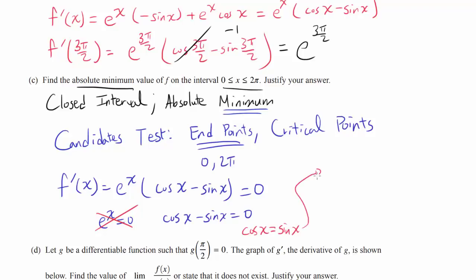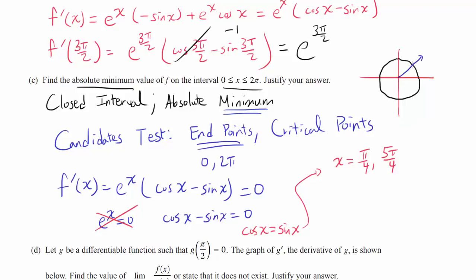So we need cosine of x to equal sine of x. Drawing the unit circle, there are two values on [0, 2π] where the x and y values are the same: pi over 4 and 5 pi over 4. At 5 pi over 4 both cosine and sine are negative, so they are equal there. So x equals pi over 4 or 5 pi over 4.